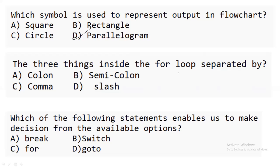The next question: in a for loop, the three parts — initialization, condition, and modification (increment or decrement) — are separated by what? These three parts are separated by a semicolon. So semicolon is the correct answer.